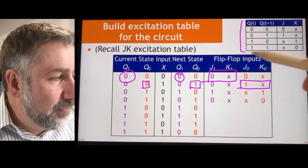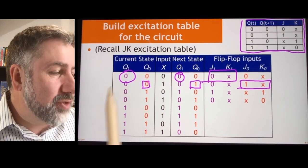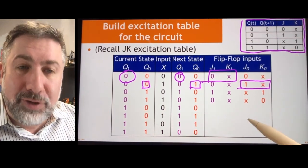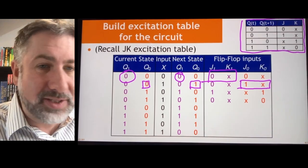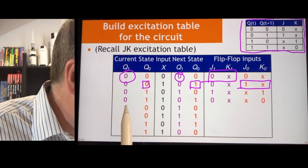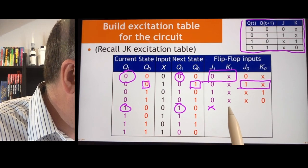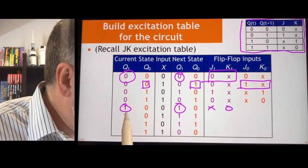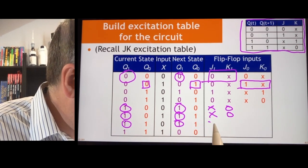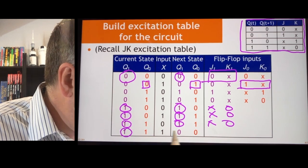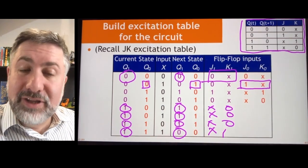Here is the excitation table for the JK flip-flop, and we can read from it each pair of state transitions for the entire table — it's really just a copy-and-paste procedure. If I'm in state 1 and I want to stay in state 1, J is don't care and K is 0. A 1-to-1 transition is don't care and 0. A 1-to-0 transition is don't care and 1. That's how I fill in the entire table.